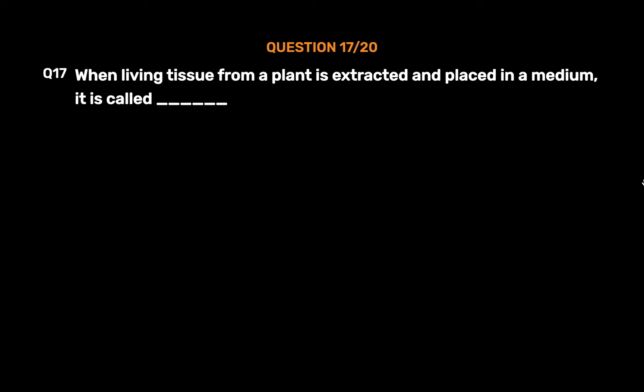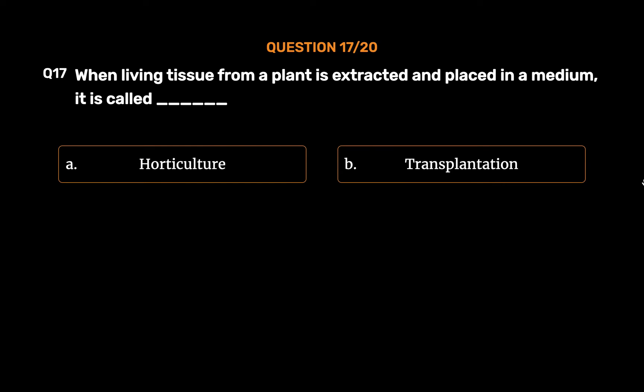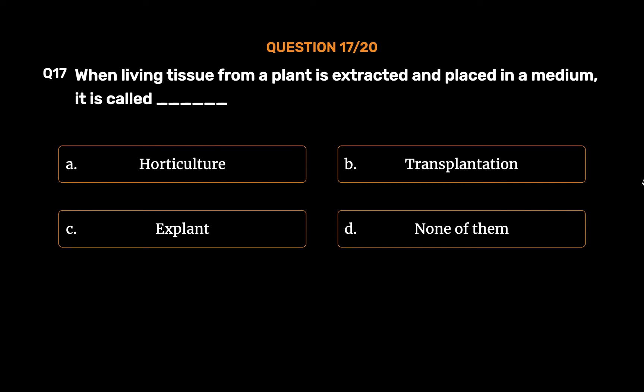Question No. 17: When living tissue from a plant is extracted and placed in a medium, it is called. Option A: Horticulture. Option B: Transplantation. Option C: Explant. Option D: None of them. The correct answer is Option C: Explant.